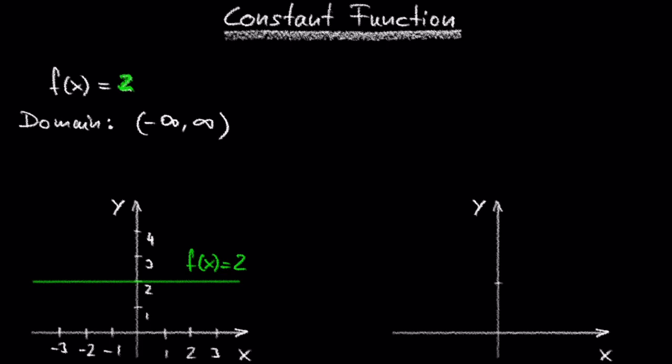What about the range? The only output value in our example is the constant 2. In interval notation, this is written as the interval that both begins and ends with 2.